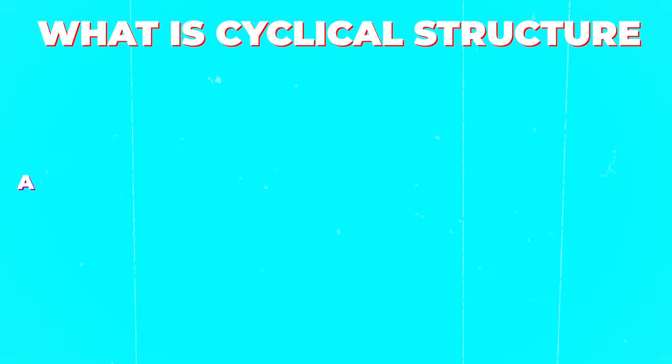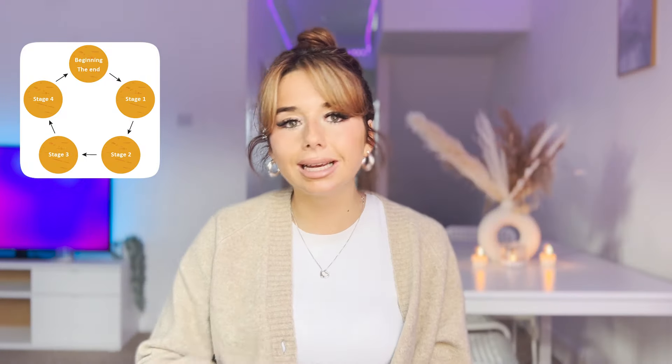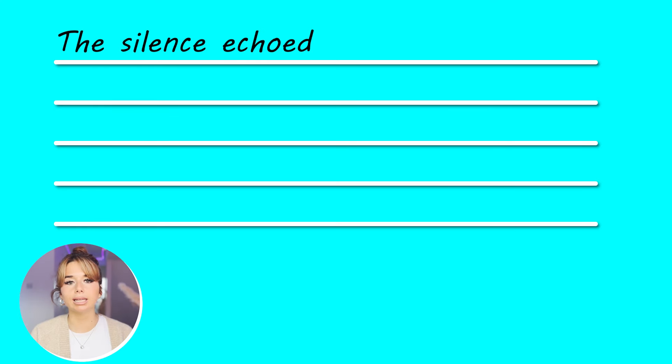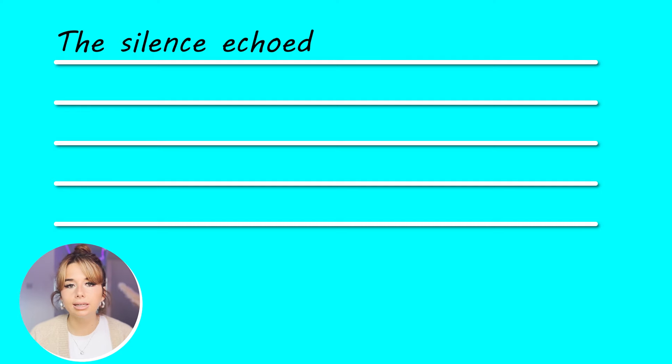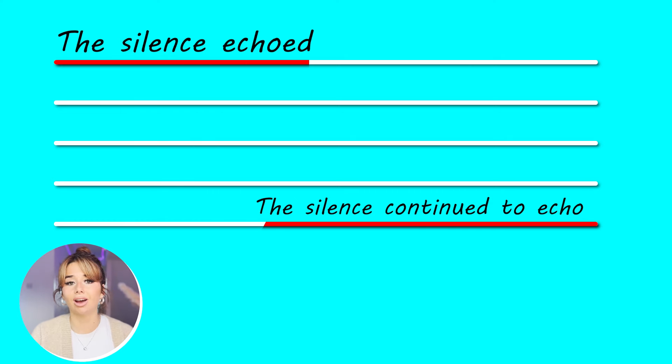Number one: cyclical structure. A cyclical structure is when a piece of writing begins and ends in the same way — like a cycle or circle, looping back around. For example, if you start your creative writing with 'the silence echoed,' your last line could be 'the silence continued to echo.' That is a cyclical structure because you're cycling back to the same idea.